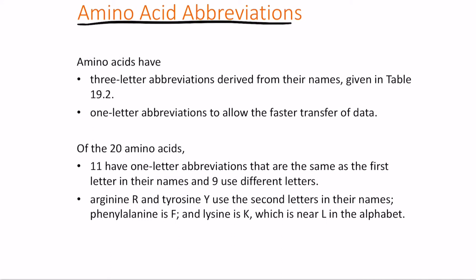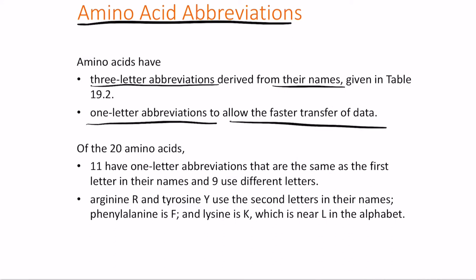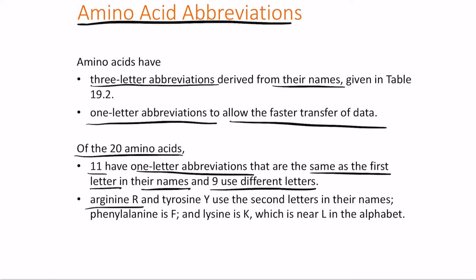Amino acids are recognized using abbreviations — three-letter abbreviations derived from their names, and one-letter abbreviations for faster data transfer. Of the 20 amino acids, 11 use the first letter of their name as their one-letter code. Nine use different letters: for example, arginine uses R (because A is taken by alanine), tyrosine uses Y (second letter), phenylalanine uses F (sounds like 'F'), and lysine uses K (nearest letter after L in the alphabet).